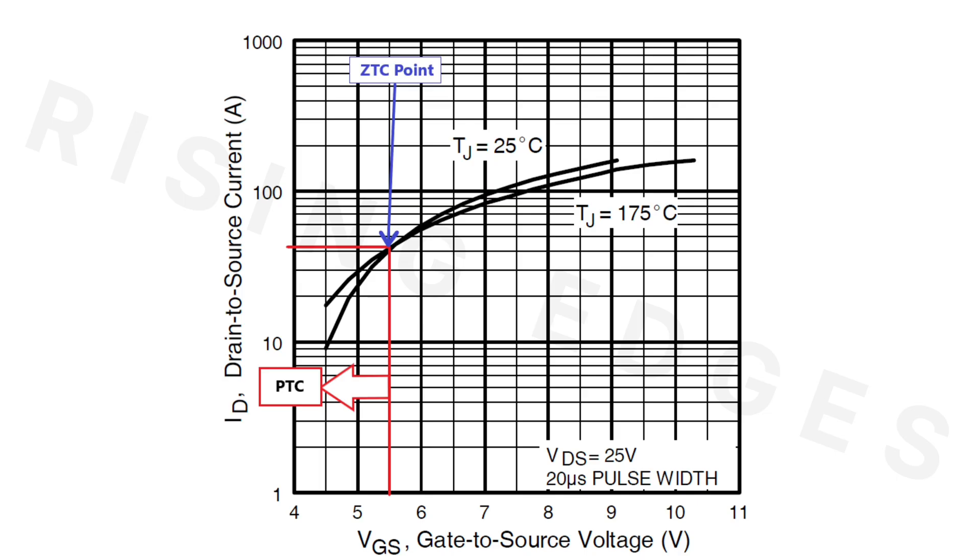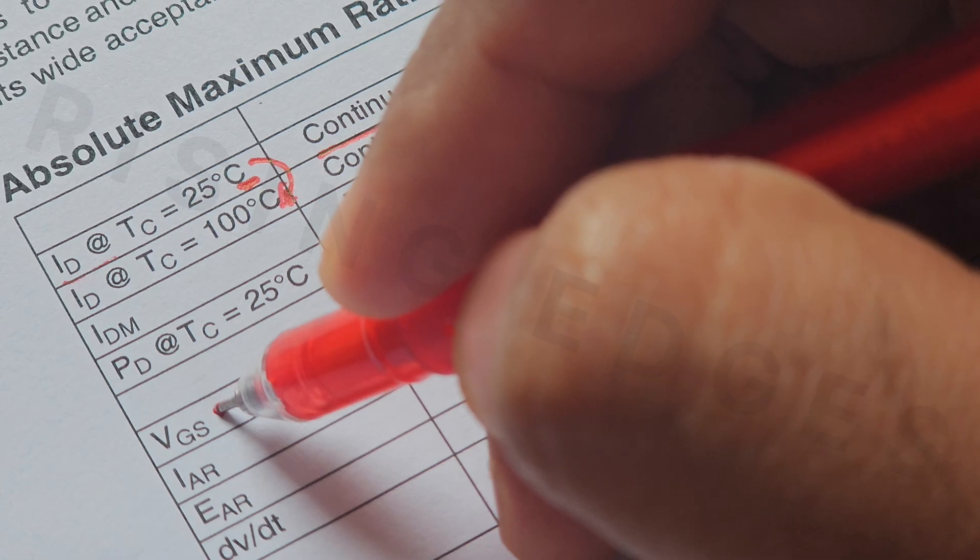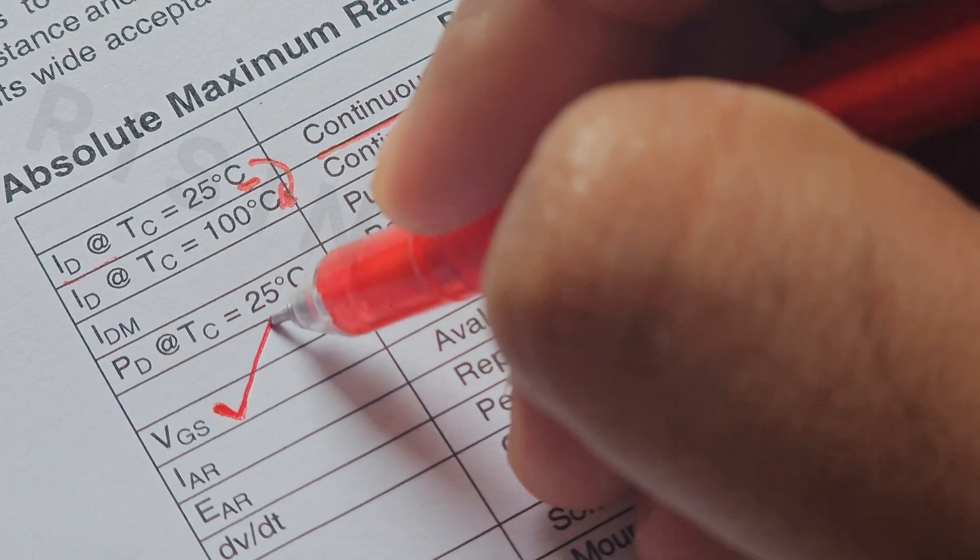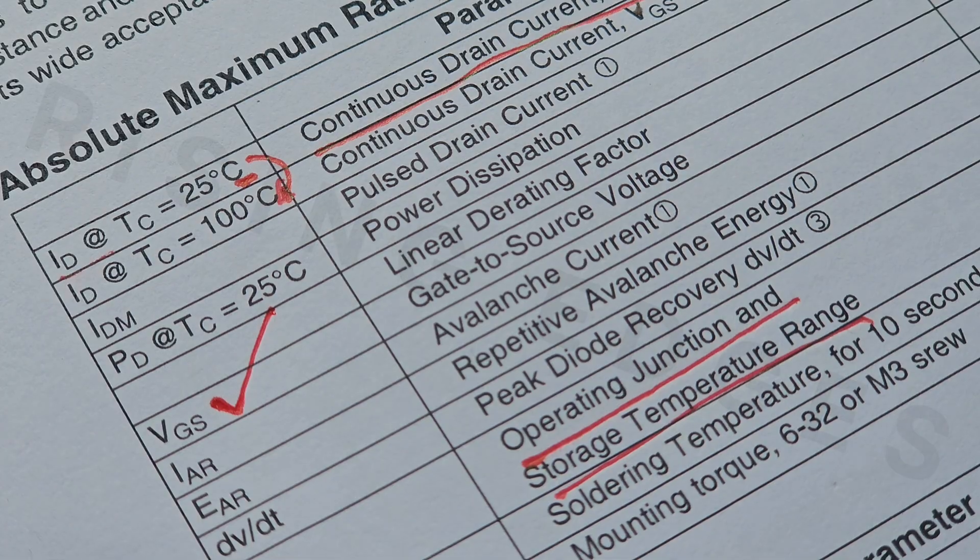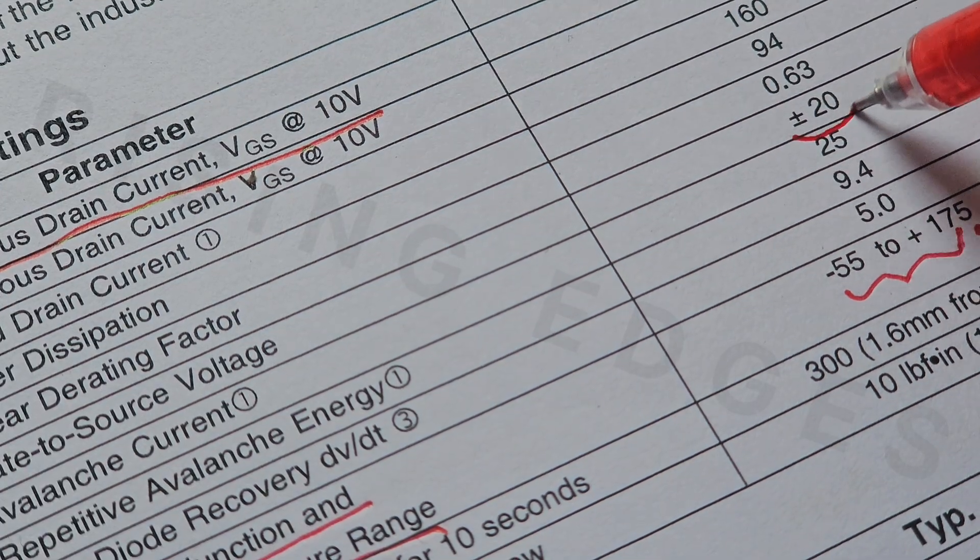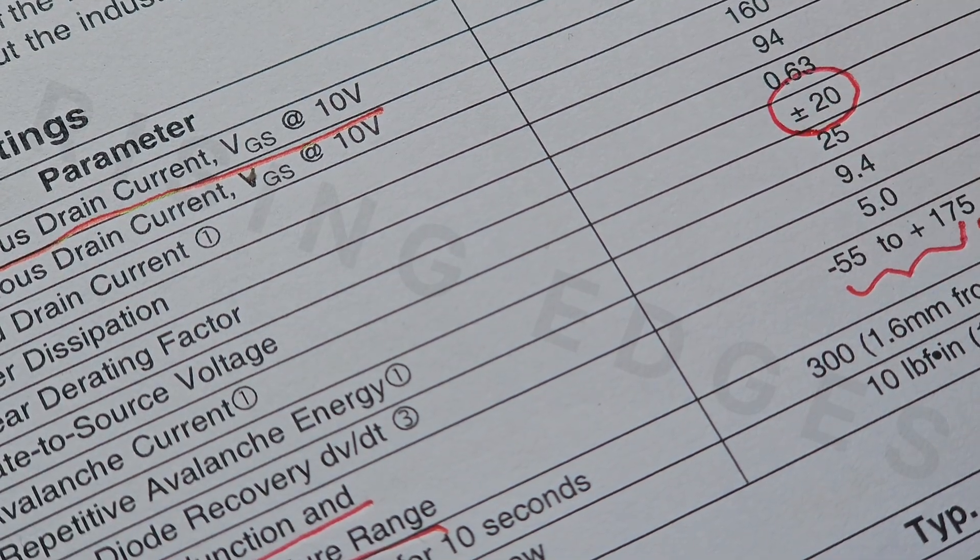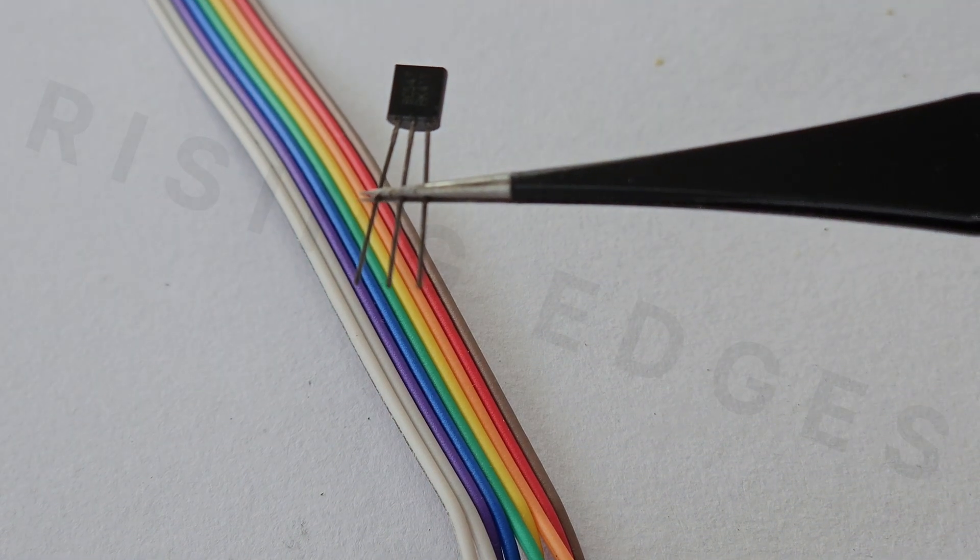To avoid that, we need to drive the gate well above this point. I chose 12V since it's a common, easily available voltage that provides fast, reliable switching and stays well below the MOSFET's VGS Max.